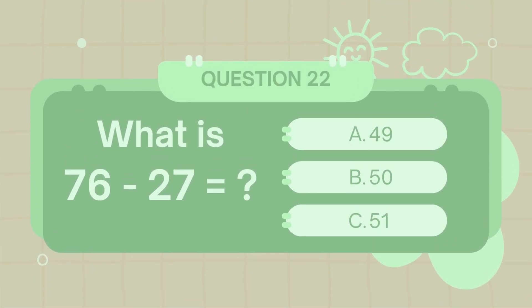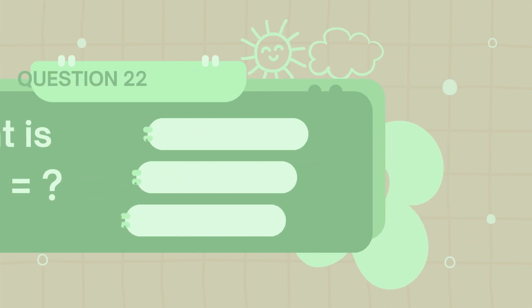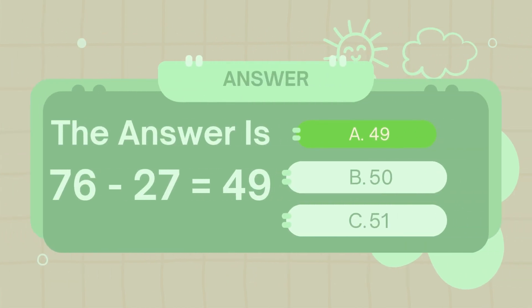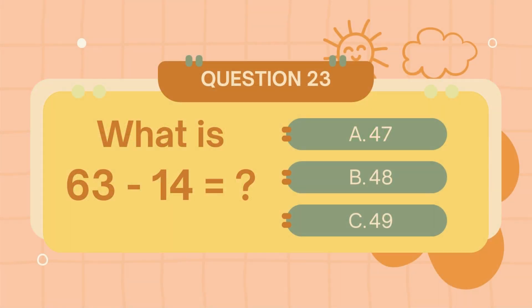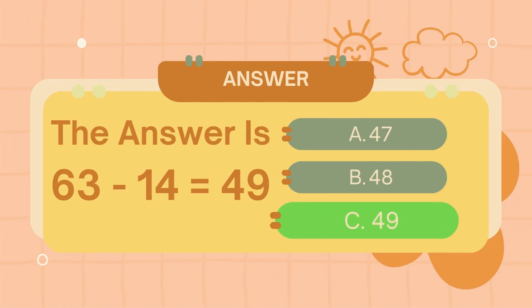What is seventy-six minus twenty-seven? The answer is forty-nine. What is sixty-three minus fourteen? The answer is forty-nine.